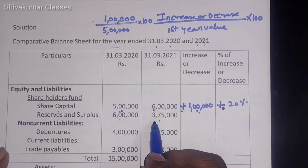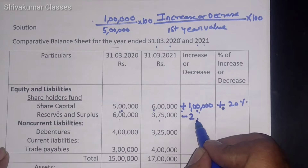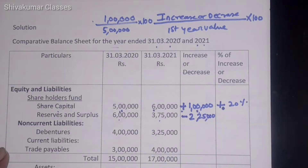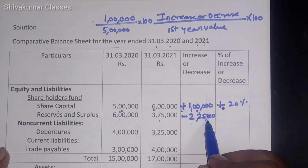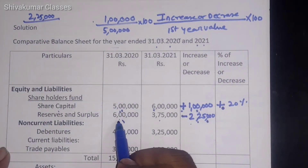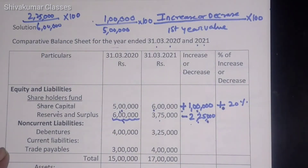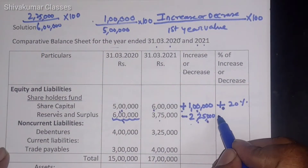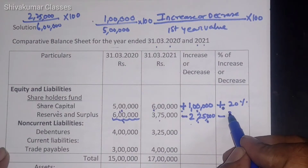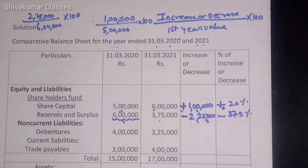Next, Reserves and Surplus: first year 6 lakh and second year is 3 lakh 75,000 — therefore decreased. Minus 2 lakh 25,000 has been decreased. Now to find the percentage: 2,25,000 divided by first year value of 6 lakhs, multiplied by 100 — the percentage is minus 37.5%. In the same manner we continue for the remaining items.